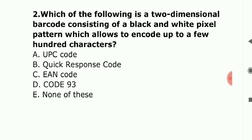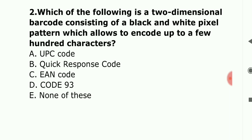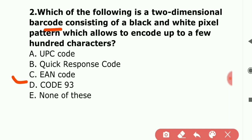Next question: 'Which of the following is a two-dimensional barcode consisting of a black and white pixel pattern which allows encoding of up to a few hundred characters?' This term is a two-dimensional barcode with a black and white pixel pattern. Sorry guys — the answer is B: Quick Response Code (QR Code).